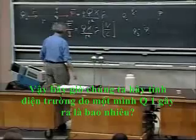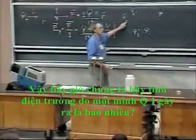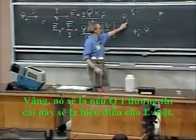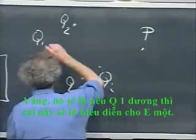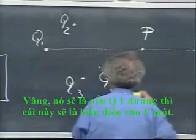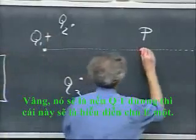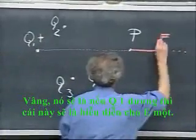So now I can say what is the E field due to Q1 alone? Well, that would be, if Q1 were positive, then this might be a representation for E1.